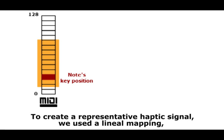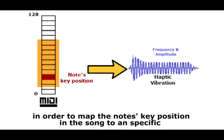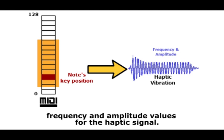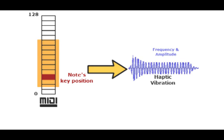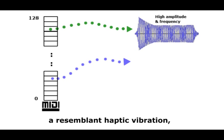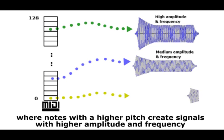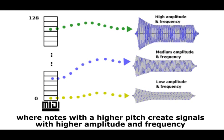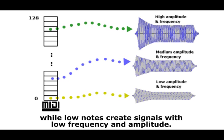To create a representative haptic signal, we use a linear mapping in order to map the note's key position in the song to specific frequency and amplitude values for the haptic signal. The notes of just one track of the song are used as parameters to create a resemblance haptic vibration, where notes with a higher pitch create signals with higher amplitude and frequency, while no notes create signals with low frequency and amplitude.